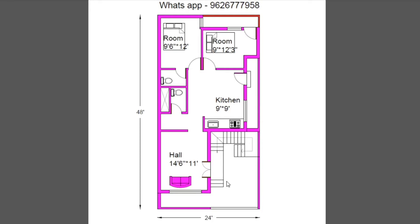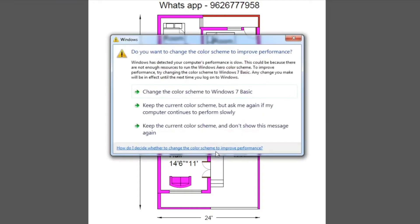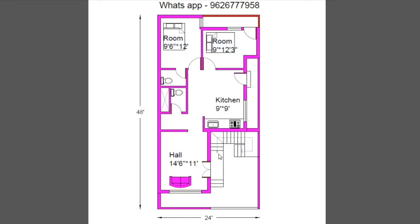Next, we need the main door steps. This is the main door size: 4 feet by 7 feet. This is the first floor of the staircase. The main door size is 4 feet by 7 feet — a double door.